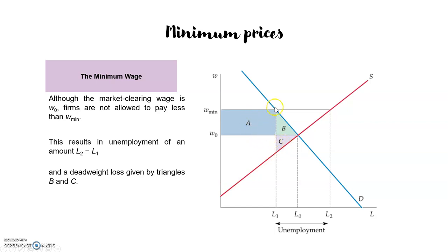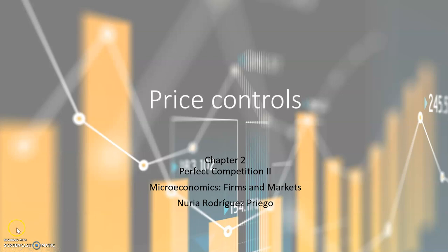The quantity of workers hired will be lower for the firms — at this higher salary they will only demand l1 workers, but since the salary has increased, more people would like to work, so the supply of workers will be l2. The difference between the supply of workers and the demand by firms represents people who are unemployed at this higher salary. At the end, there will also be a deadweight loss given by triangles B and C, which are lost by the firms and by the workers. That's all for now — see you in the next video.